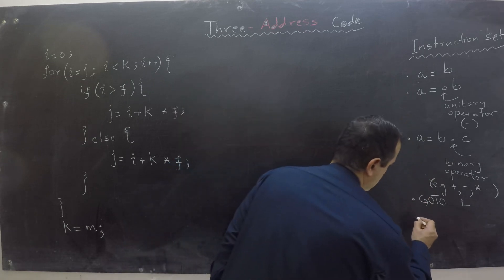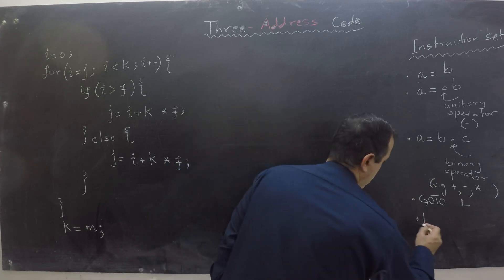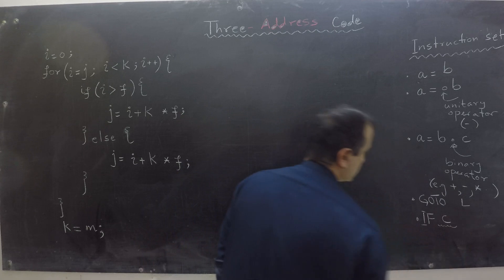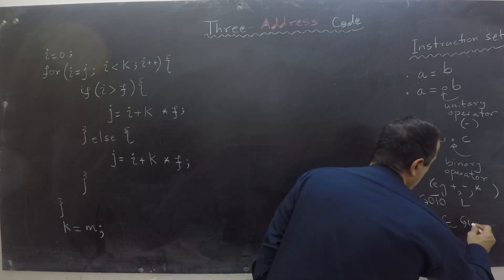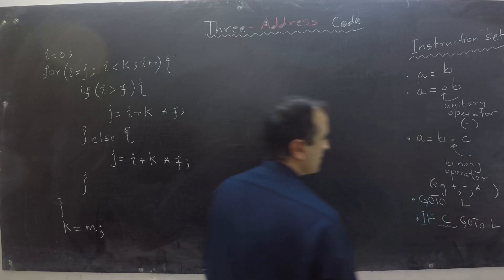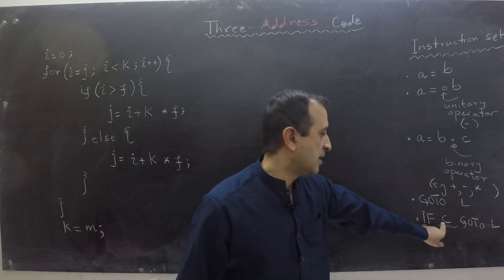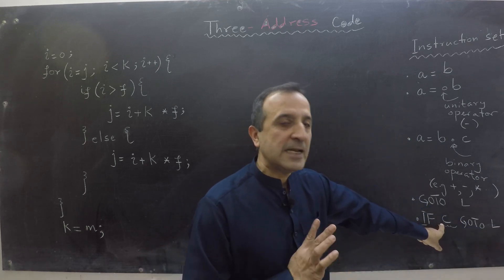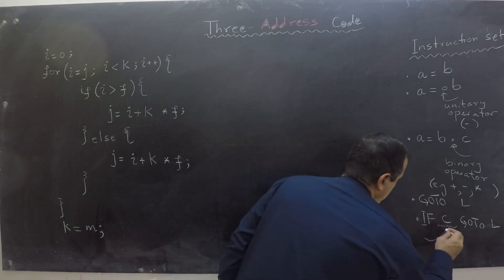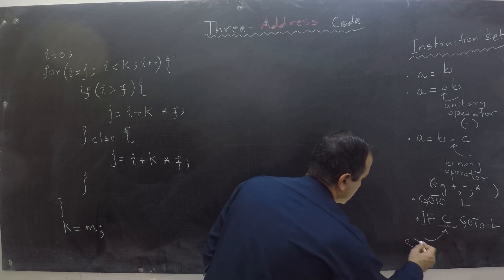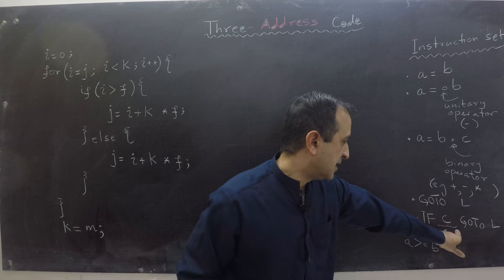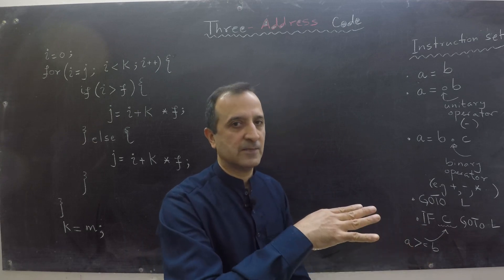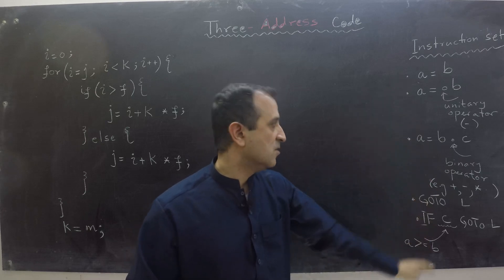Another instruction is a conditional jump, written as: if condition C, go to some address L. Note that this condition can have at most two registers. If the condition has more than two registers then it doesn't represent three address code. For example, our condition could be A is greater than or equal to B — that's valid. But if a condition has more than two registers then we have to break it into two different conditions. That's our instruction set for three address code.